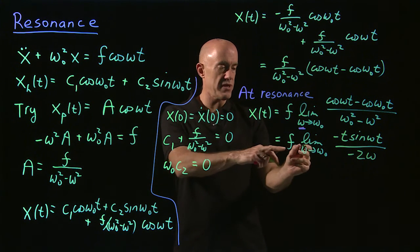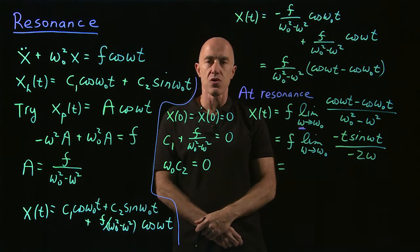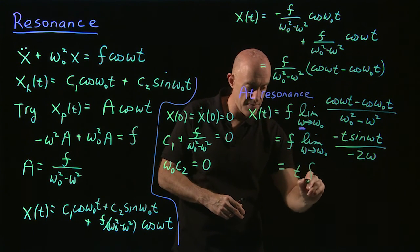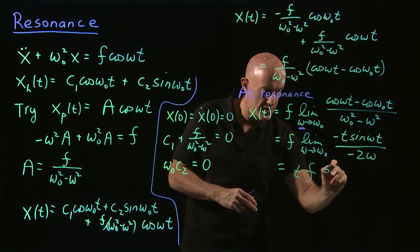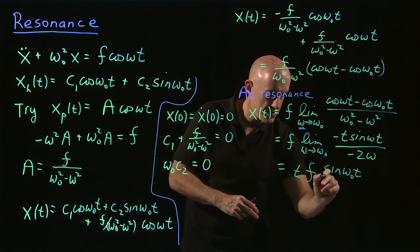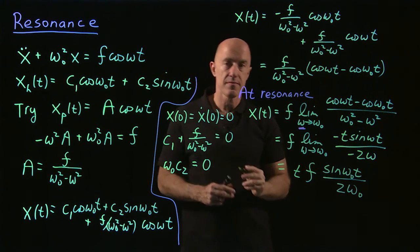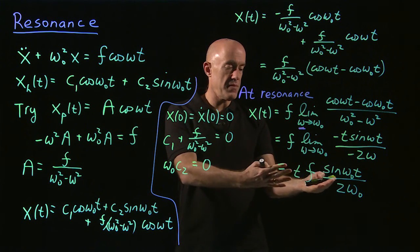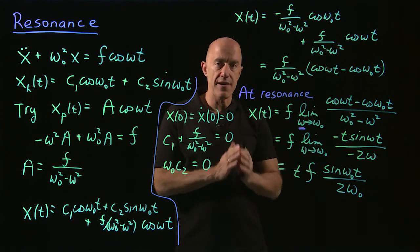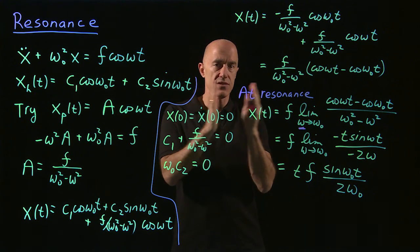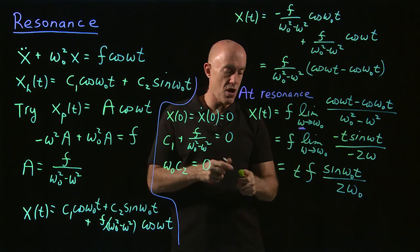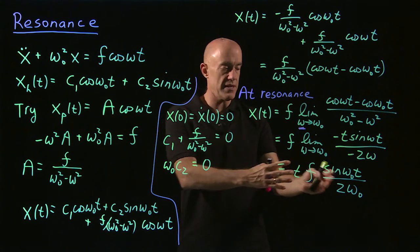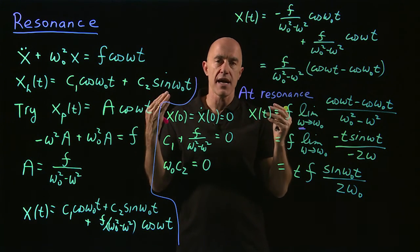At this point we can substitute omega equal to omega naught. It's no longer 0 over 0, and the minus signs cancel. We end up with t times f times sine omega naught t divided by 2 omega naught. That's the solution for our oscillator at resonance. The amplitude is t times f, so it starts at 0 but grows in time — the vibration gets larger and larger with each cycle, producing very large amplitudes at resonance. That's why the wine glass breaks.